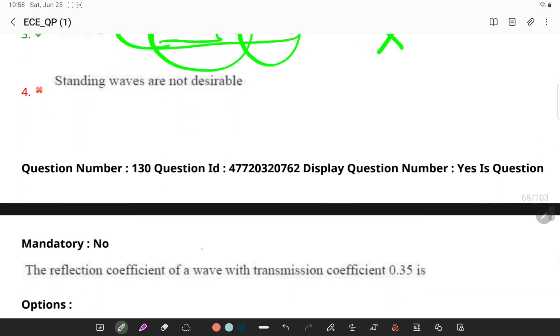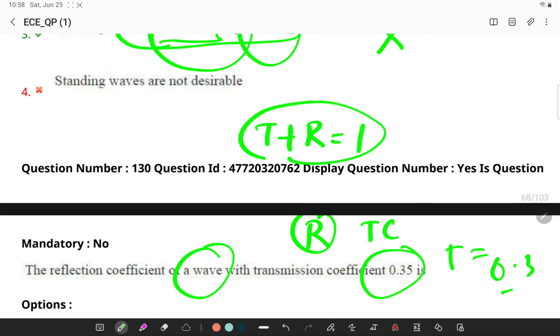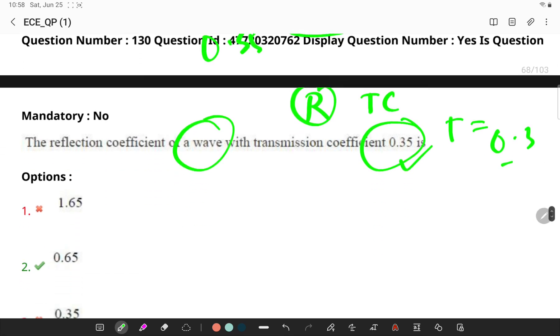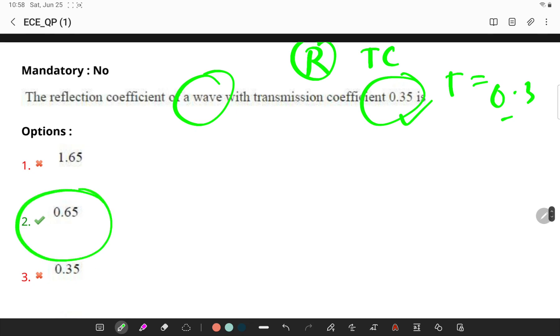So the reflection coefficient of a wave with transmission coefficient 0.35 - remember, reflection coefficient is the reverse of transmission coefficient. So I have a simple formula, T plus R, which is 1. In this case, he has given transmission coefficient as 0.35. So 1 minus 0.35, 0.65 is your reflection coefficient.